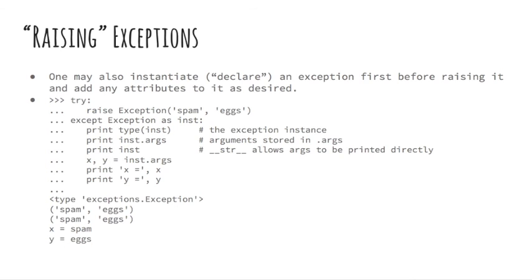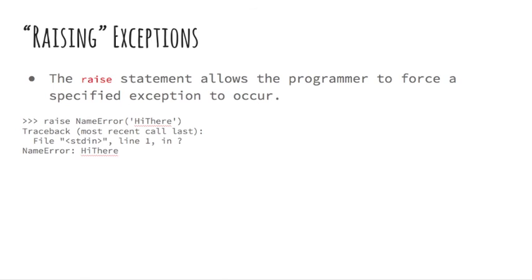If an exception has an argument, it is printed as the last part, detail, of the message for unhandled exceptions. The sole argument to raise indicates the exception to be raised. This must be either an exception instance or an exception class, a class that derives from Exception.